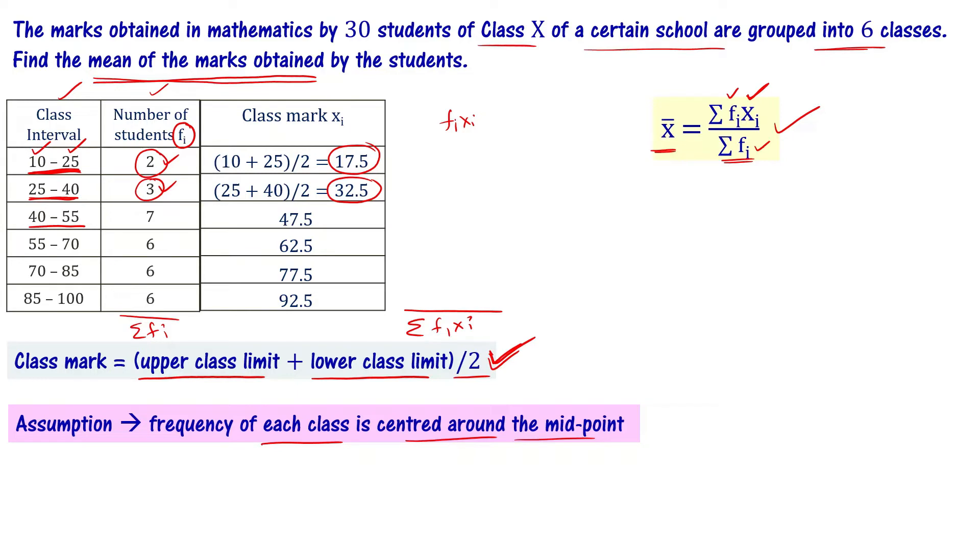But the direct method has a problem. It's not a problem, but it is a bit tedious. We need to calculate fi times xi for each class. For example, 6 times 77.5, 6 times 92.5. We need a calculator for this. It takes a lot of effort, and if there are many classes, the multiplication becomes difficult.